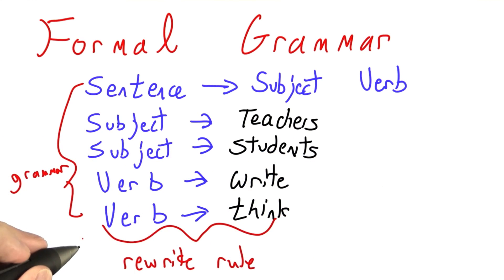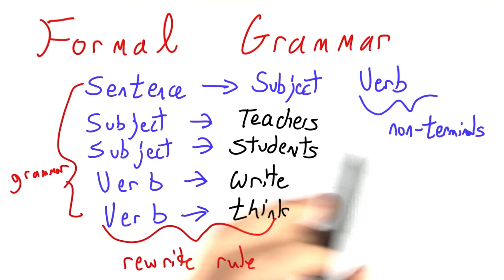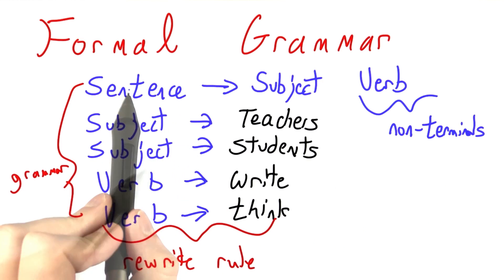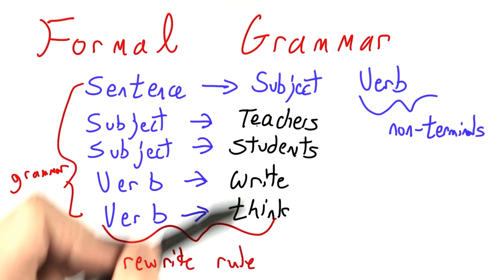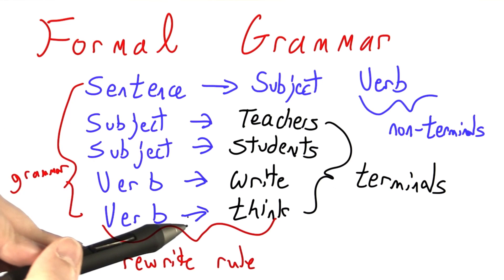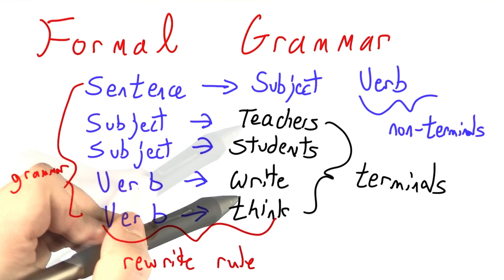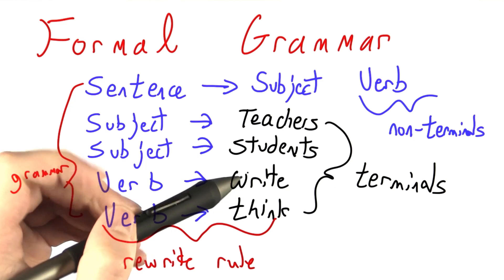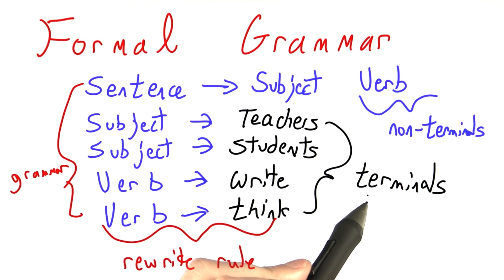The words that I've written in blue are called non-terminals. If you have one of these things written in blue, you can rewrite it with whatever's to the right of the arrow. These words that I've written in black never occur on the left of any one of our rewrite rules, so they can never be replaced. Once you get there, you're stuck, and the process terminates. We call them terminals.